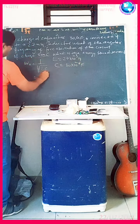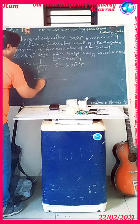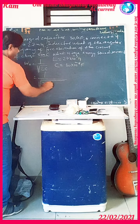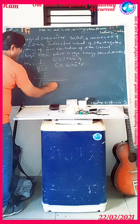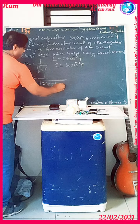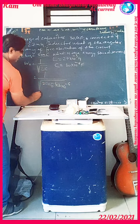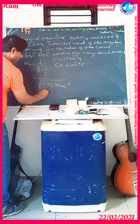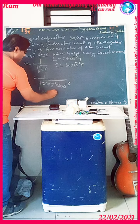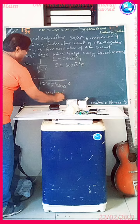Therefore, ω_R is equal to 1 over √(L × C), that is 1 over √(27 × 10⁻³ × 30 × 10⁻⁶). Solving this, we get ω_R = 1.11 × 10³ radian per second.